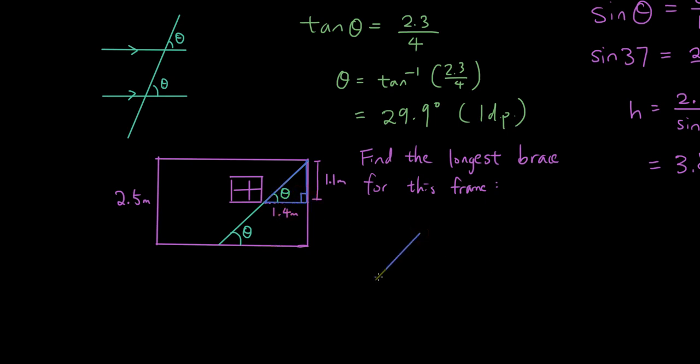So using the small triangle, we have theta, we have 1.1 meters and that's the opposite, we have 1.4 meters is the adjacent.